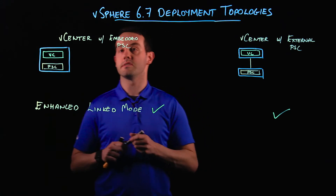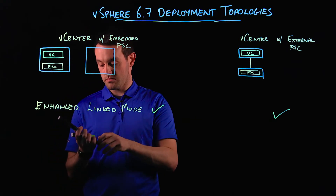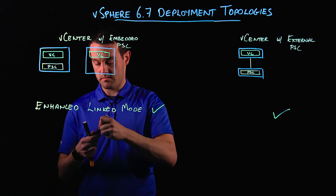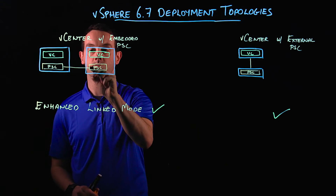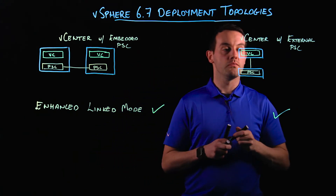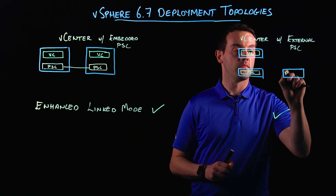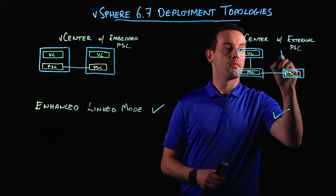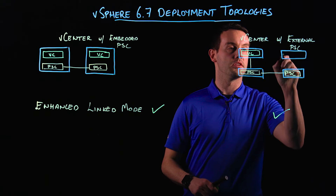For example, with vCenter with an embedded PSC, we can now join an additional embedded vCenter node replicating with the first node to achieve Enhanced Link Mode. Similarly, with vCenter with an external PSC, we can deploy an additional PSC, join it to the existing SSO domain, and add more vCenter servers to achieve a single pane of glass in our vSphere client for multiple vCenter servers.